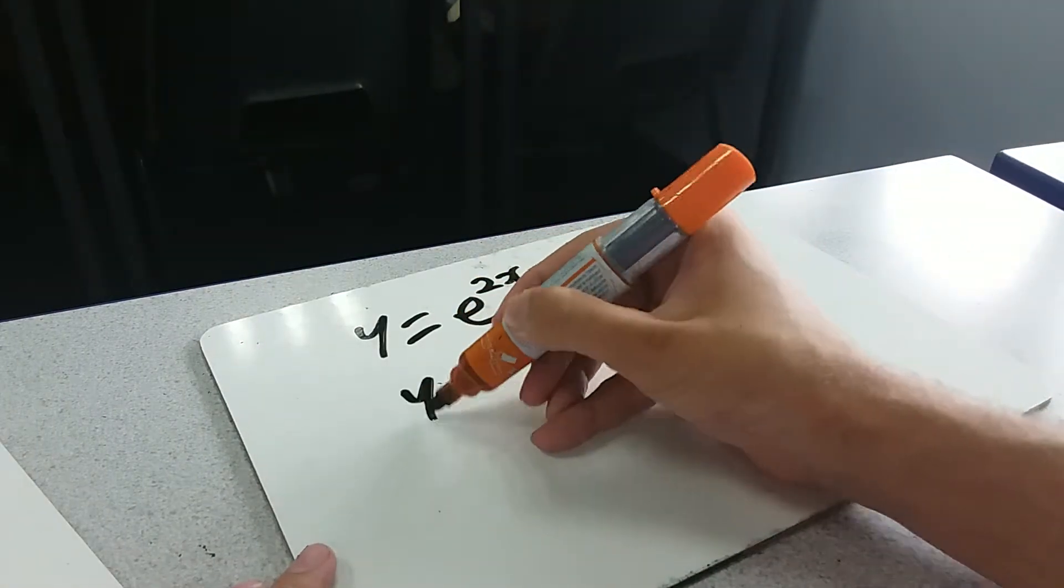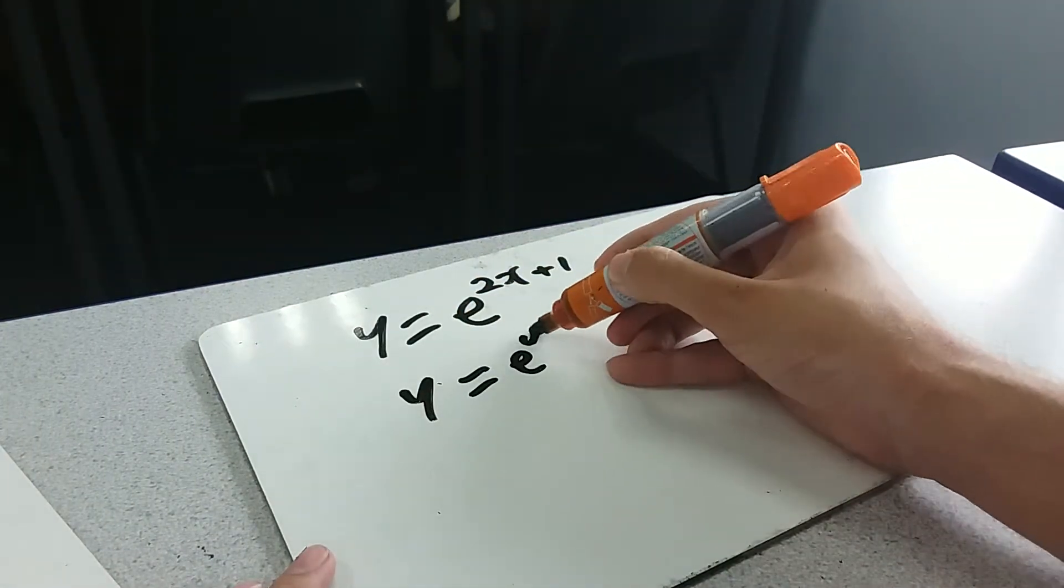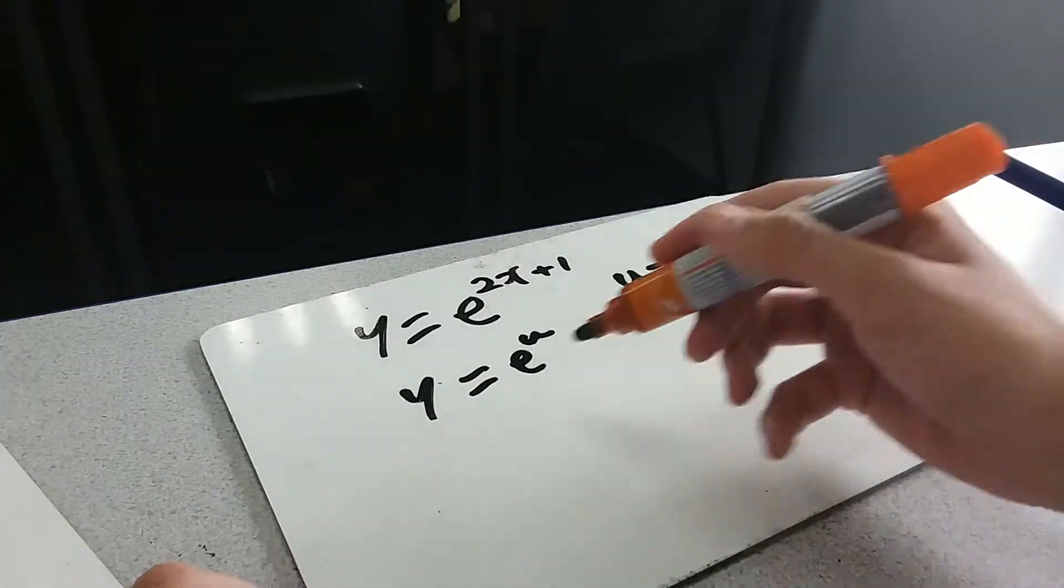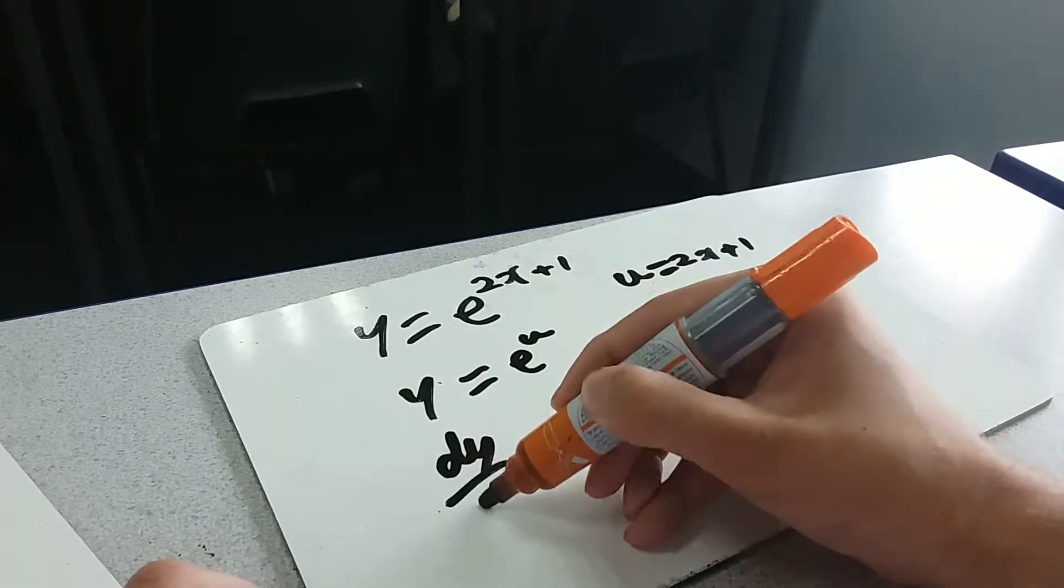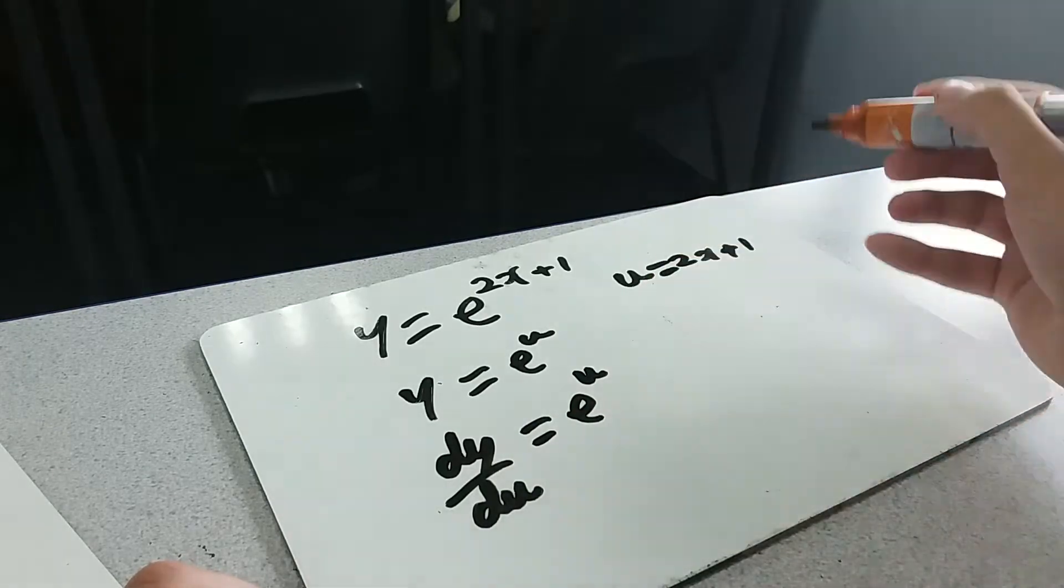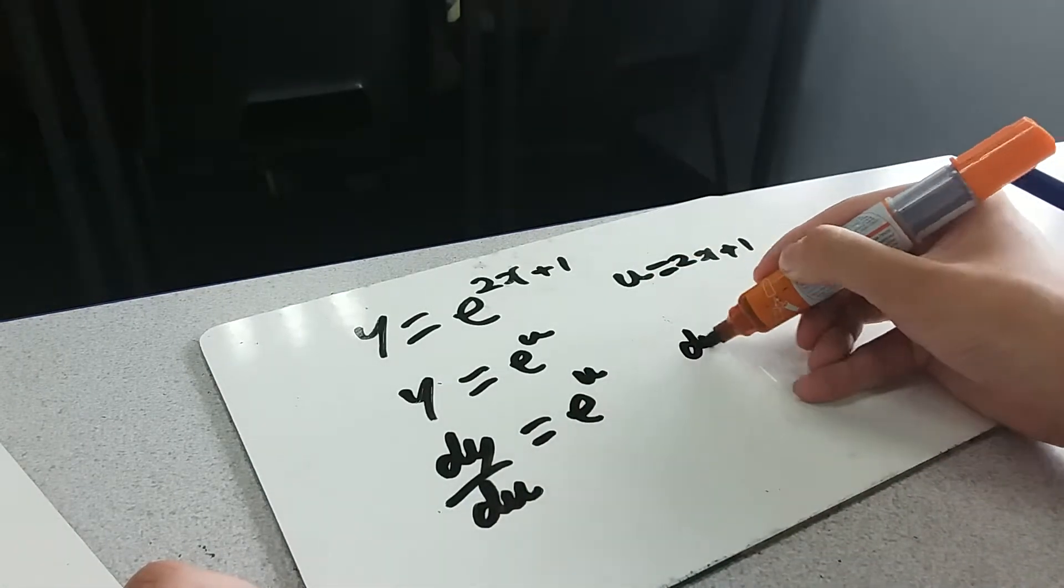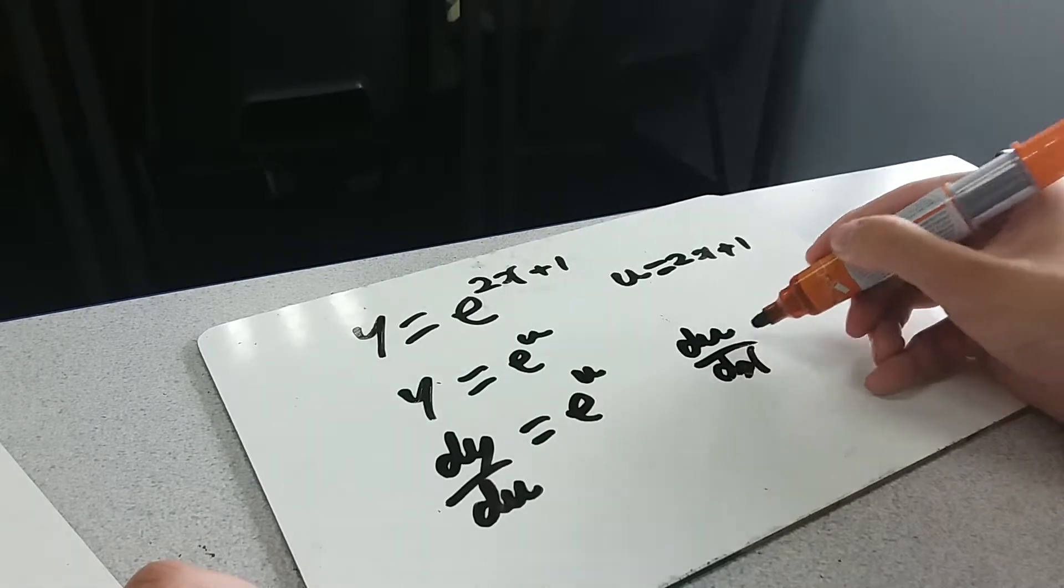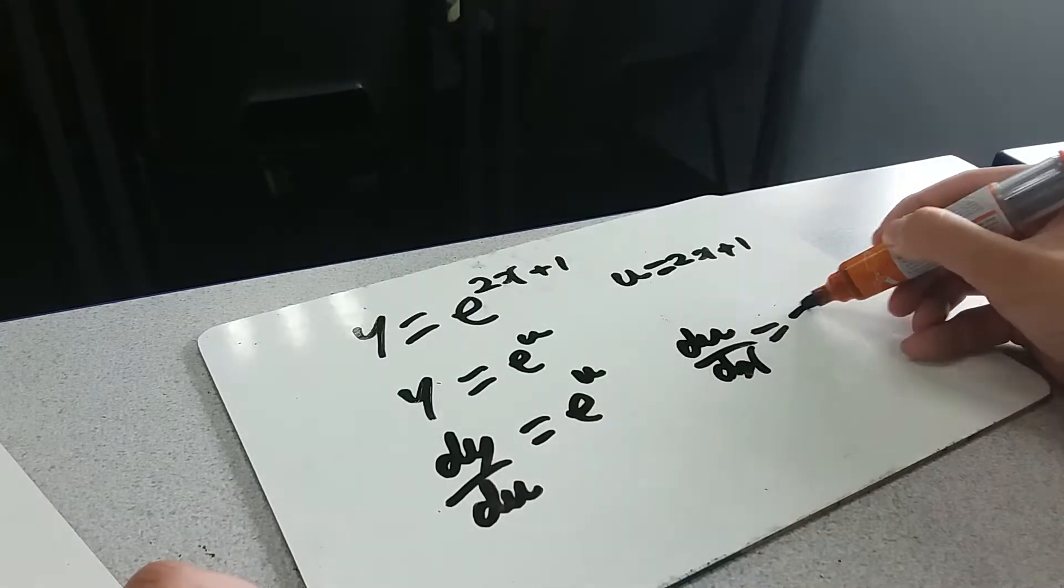This thing here is y equals e to the u. So dy du is e to the u. It just goes to itself. This thing over here, du dx, differentiating it should just be 2.